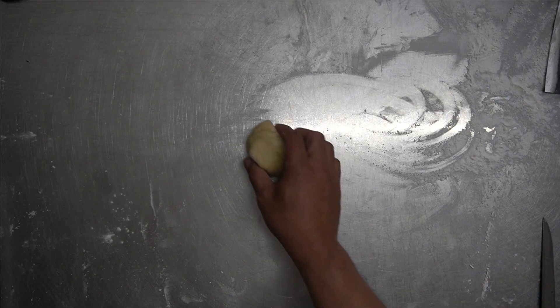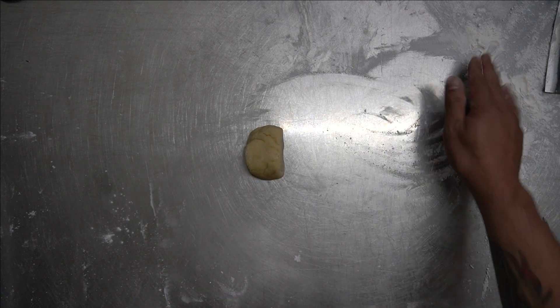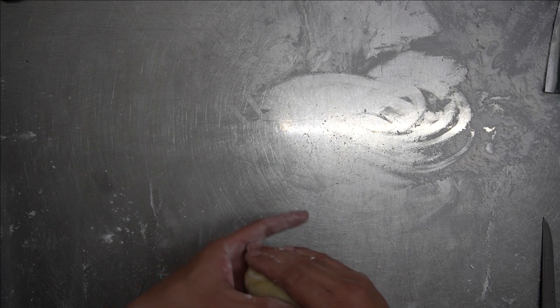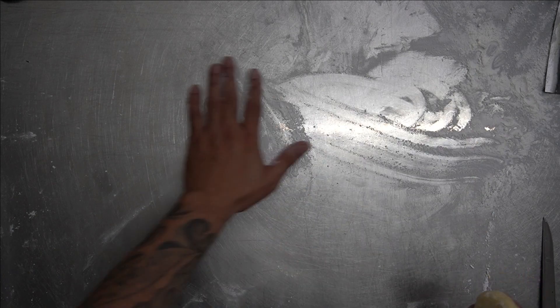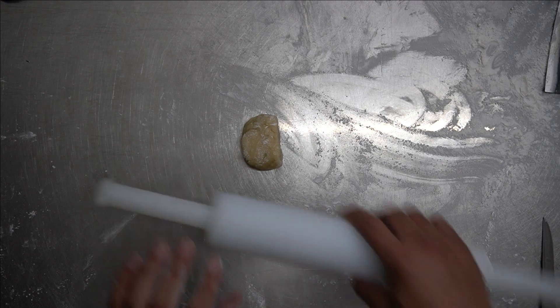After one hour of resting the dough, you need to roll it out. We're going to make fettuccine. Just flatten it. Slightly dust your table and your rolling pin, then roll it out.